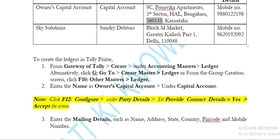Click F12 for configuration. Set party details — provide contact details — to Yes, then accept the screen. This means that if you want to use the full ledger creation screen with mailing and contact details, you will press F12 to configure it.